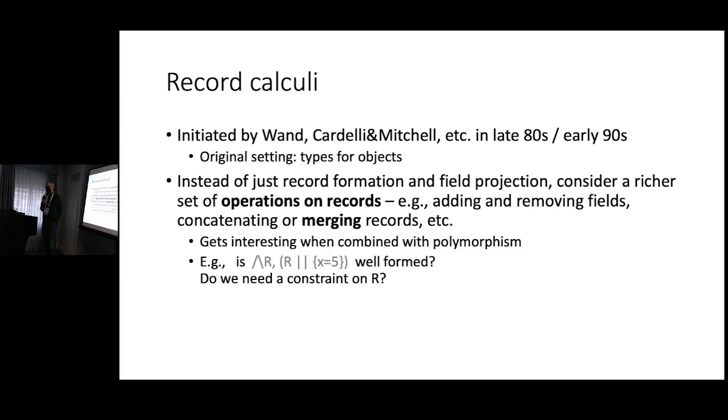Let's talk about where it all comes from. So record calculi. Back in the late 80s, early 90s, a lot of people, especially in the so-called fool foundations of object-oriented languages community, were interested in operations on records. The reason was that objects, which people were interested in trying to study because there were all these object-oriented languages out in the world, and they didn't seem to have any foundations, people started trying to think of foundations. Luca Gardelli was the biggest name in that effort, but there were many others involved. Trying to find type theoretic or lambda calculus foundations for object-oriented languages, and it seemed clear that objects were just some kind of records, records of functions. So if we had a rich enough lambda calculus of records, then that would get us some distance toward being able to model objects.